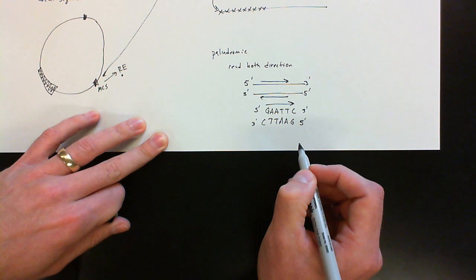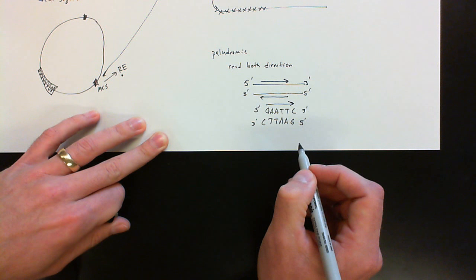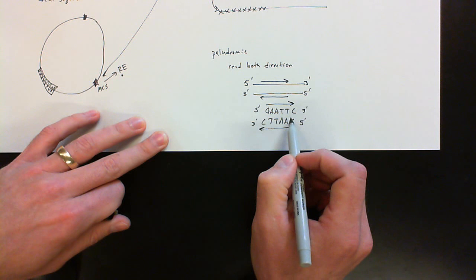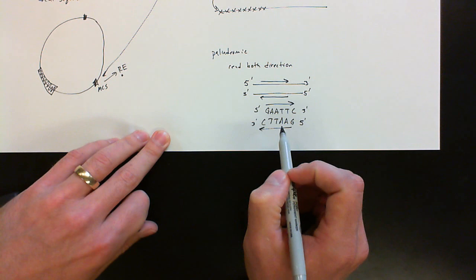So here you can see the G-A-A-T-T-C and the G-A-A-T-T-C. So all restriction enzymes cut at what we call palindromic sequences. So this is very useful. It allows us to find them if we have a DNA sequence.